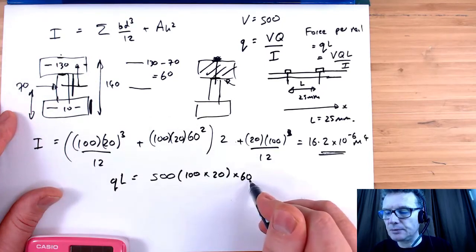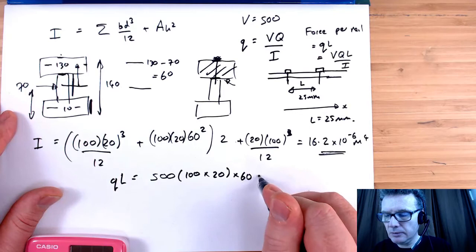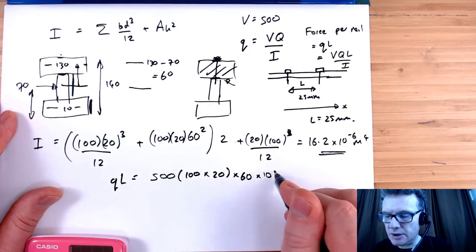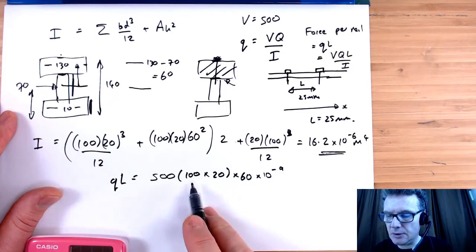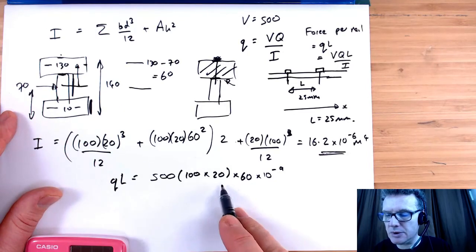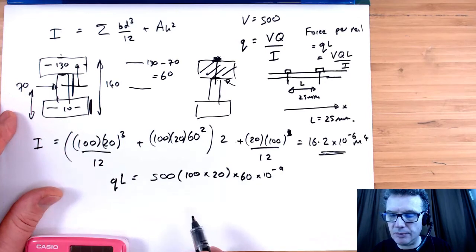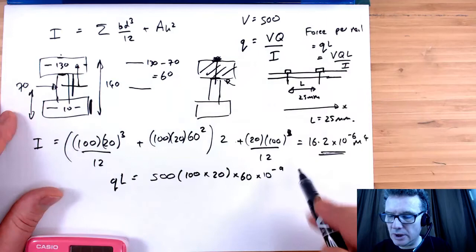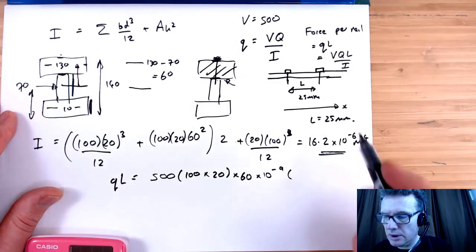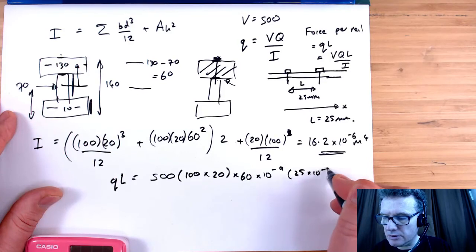So the centroid is 130 take away 70. This is in millimeters to the power of 3, so I'll put times 10 to the minus 9 there. One set of millimeters, one set of millimeters, another set of millimeters, so times 10 to the minus 9. So that is my Q. Now my L is 25 millimeters, so 25 times 10 to the minus 3.